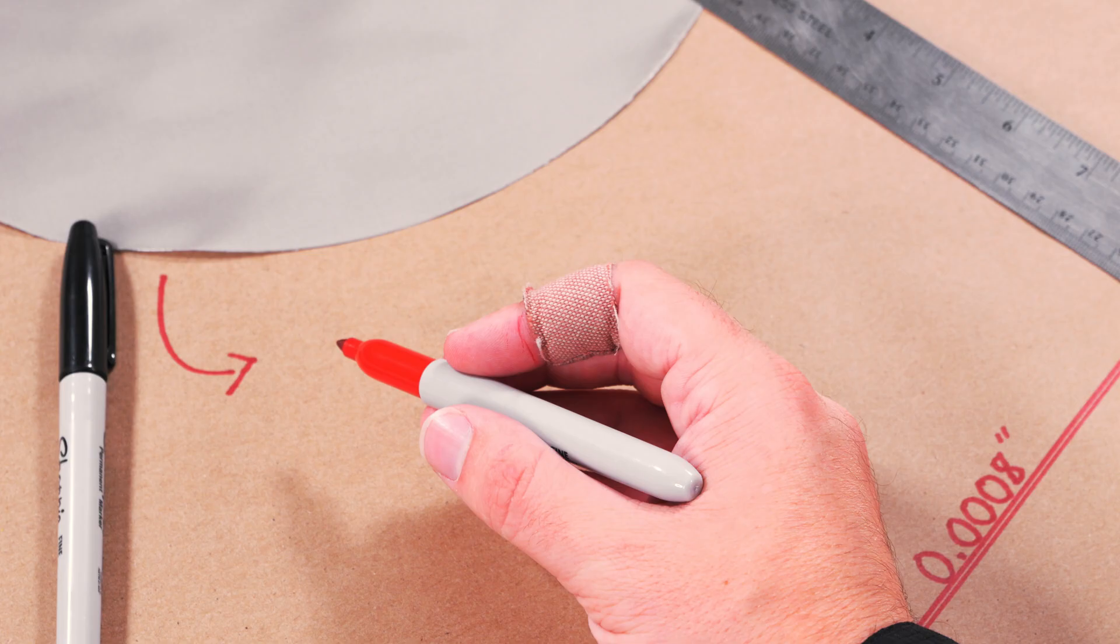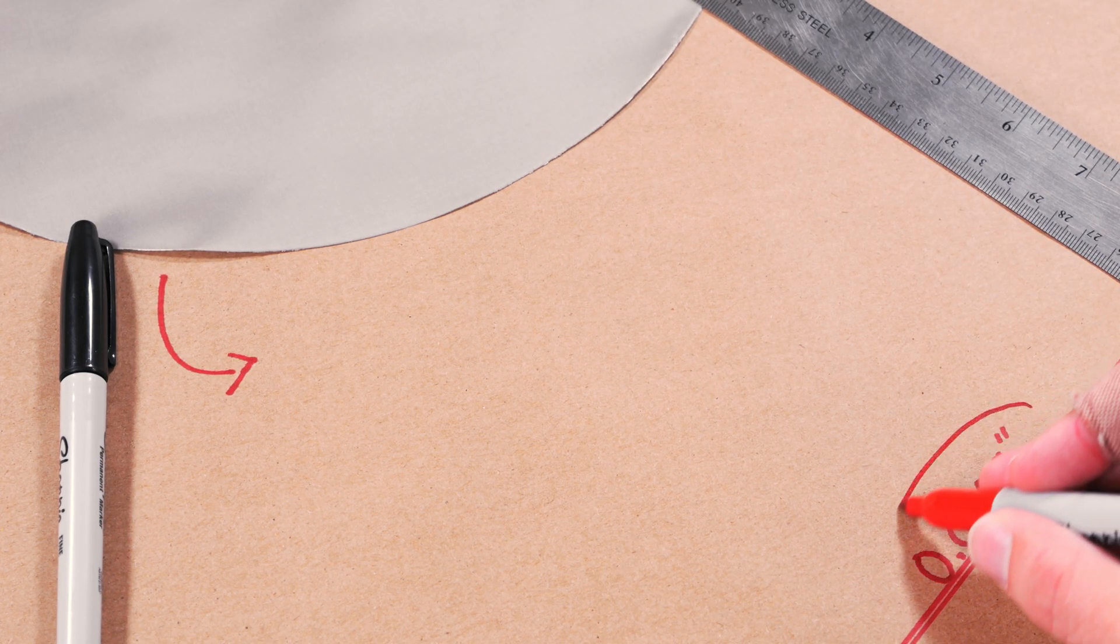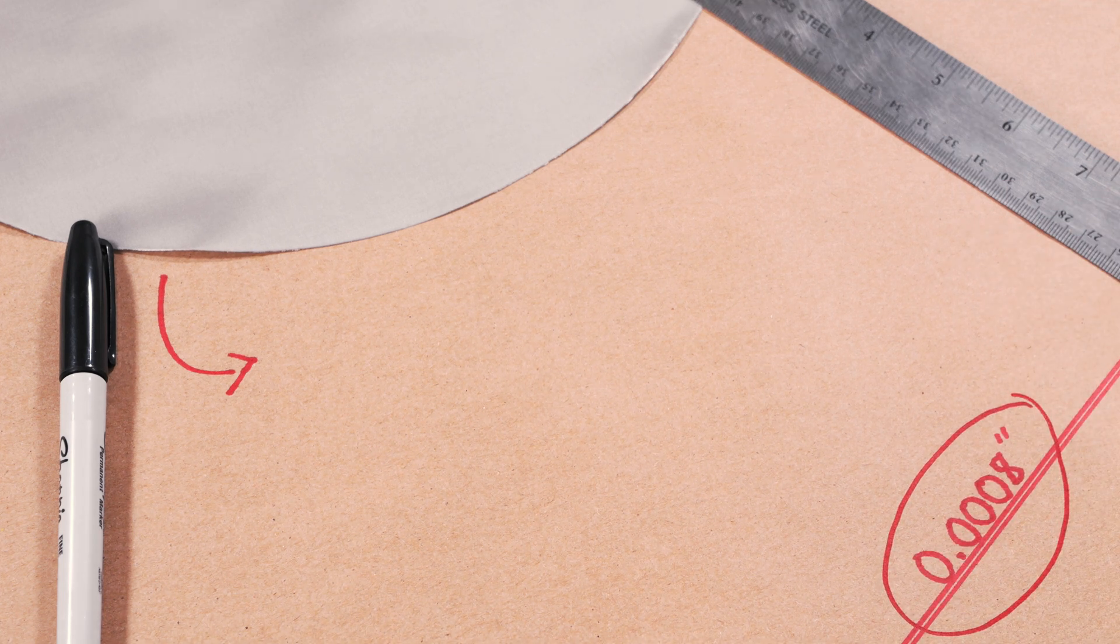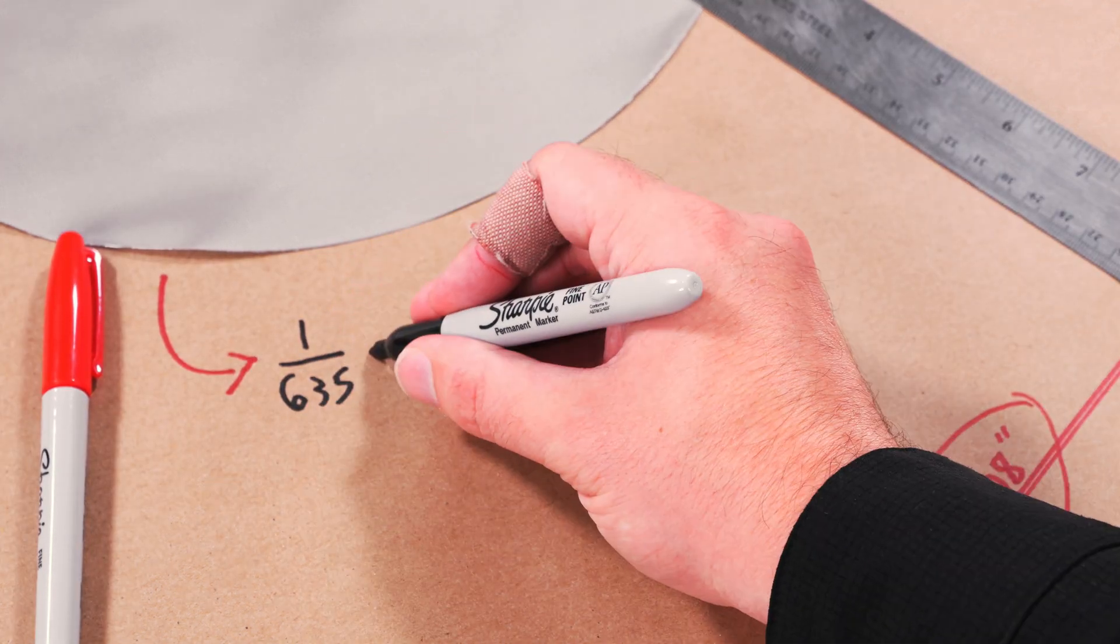So let's go crazy and find an even smaller opening. This is a 635 mesh, which is so, so incredibly small. And the wire is only 0.0008 inches in diameter. So if we go 1 divided by 635,